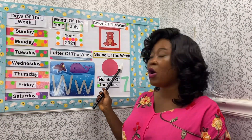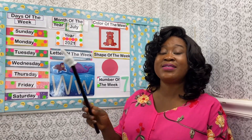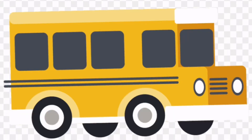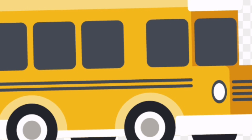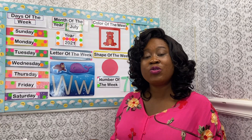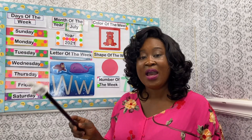Now let's move on to the shape of the week. The shape of the week is a circle, and circles go round and round. The wheels on the bus are round in shape and it is a circle. Yes, it is a circle!